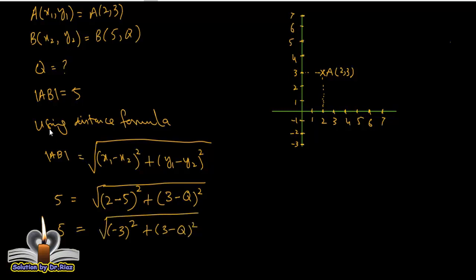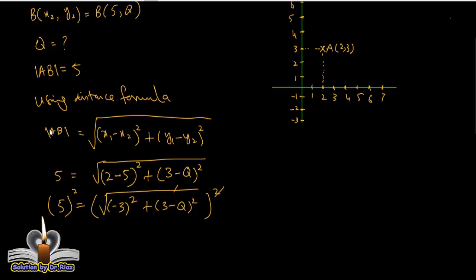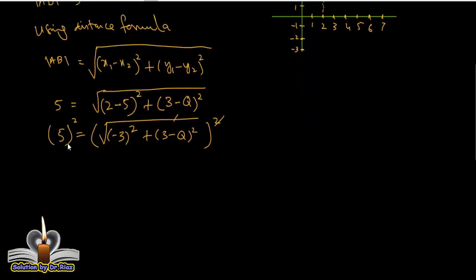If I take square on both sides, then we can cancel the square root with the square. So we get 25 equals 9 plus (3 minus Q) whole square. Here we expand using (A minus B)² which is A² plus B² minus 2AB.